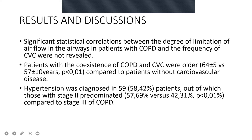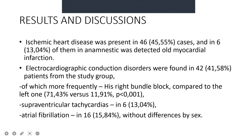Patients with coexisting cardiovascular comorbidity were older compared to patients without cardiovascular disease. Hypertension was diagnosed in 59 patients, with stage 2 predominant compared to stage 3. Ischemic heart disease was present in 45 cases, and 6 of them had an anamnestic history of old myocardial infarction. Electrocardiographic conduction disorders were found in 42 patients, with right bundle branch block more prevalent than left. Supraventricular tachycardia in 6 and atrial fibrillation in 16, without difference by sex.